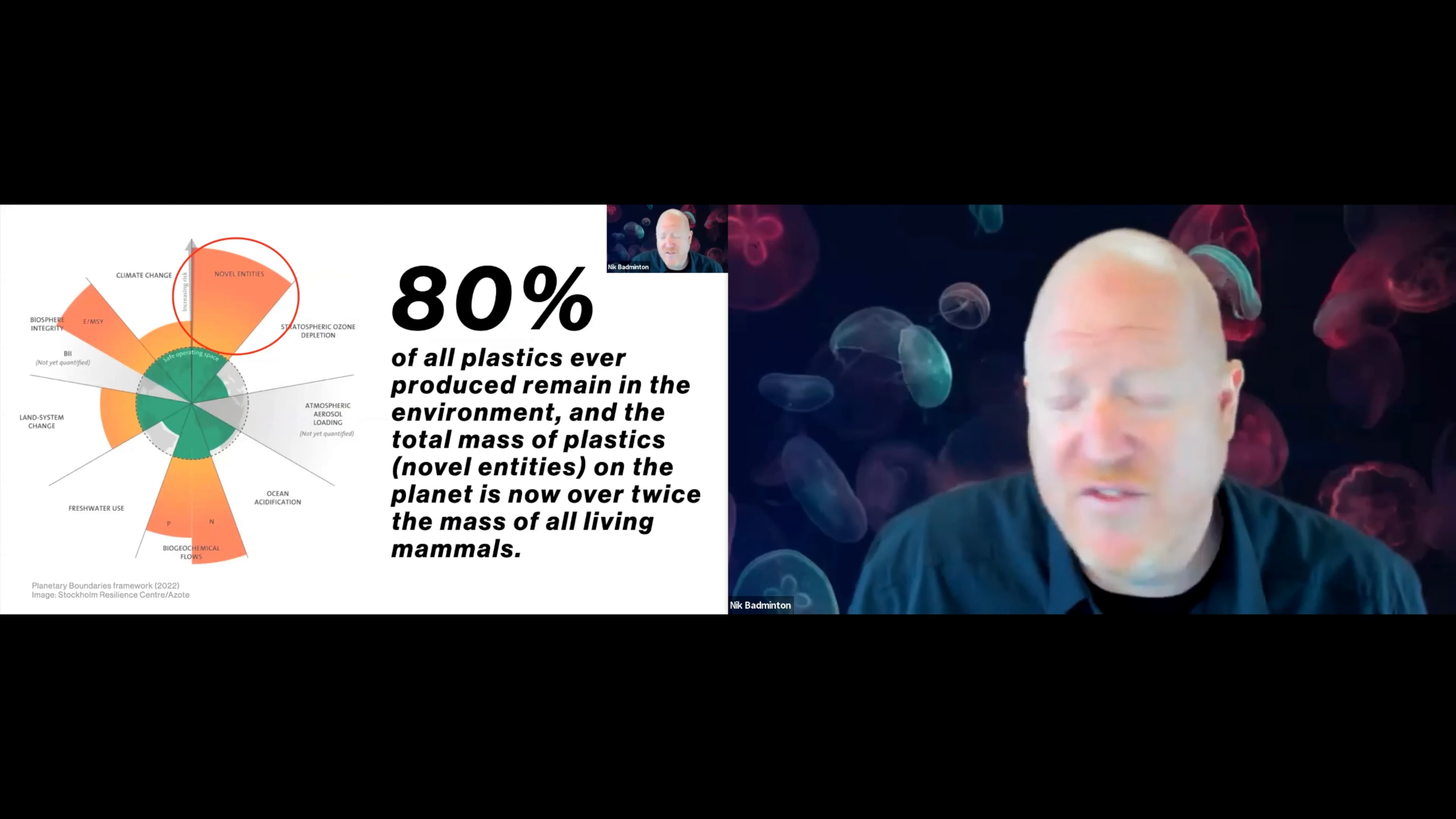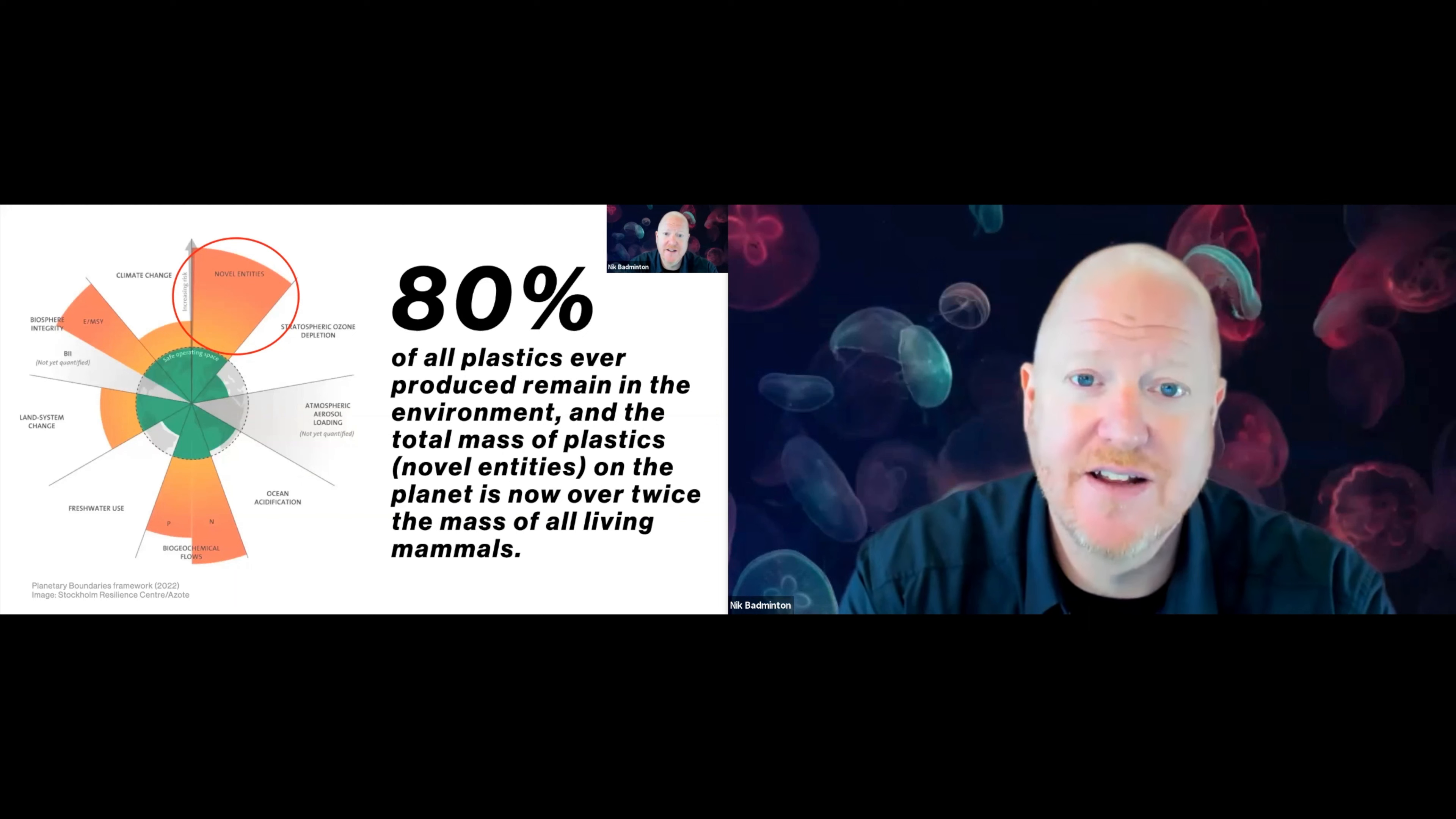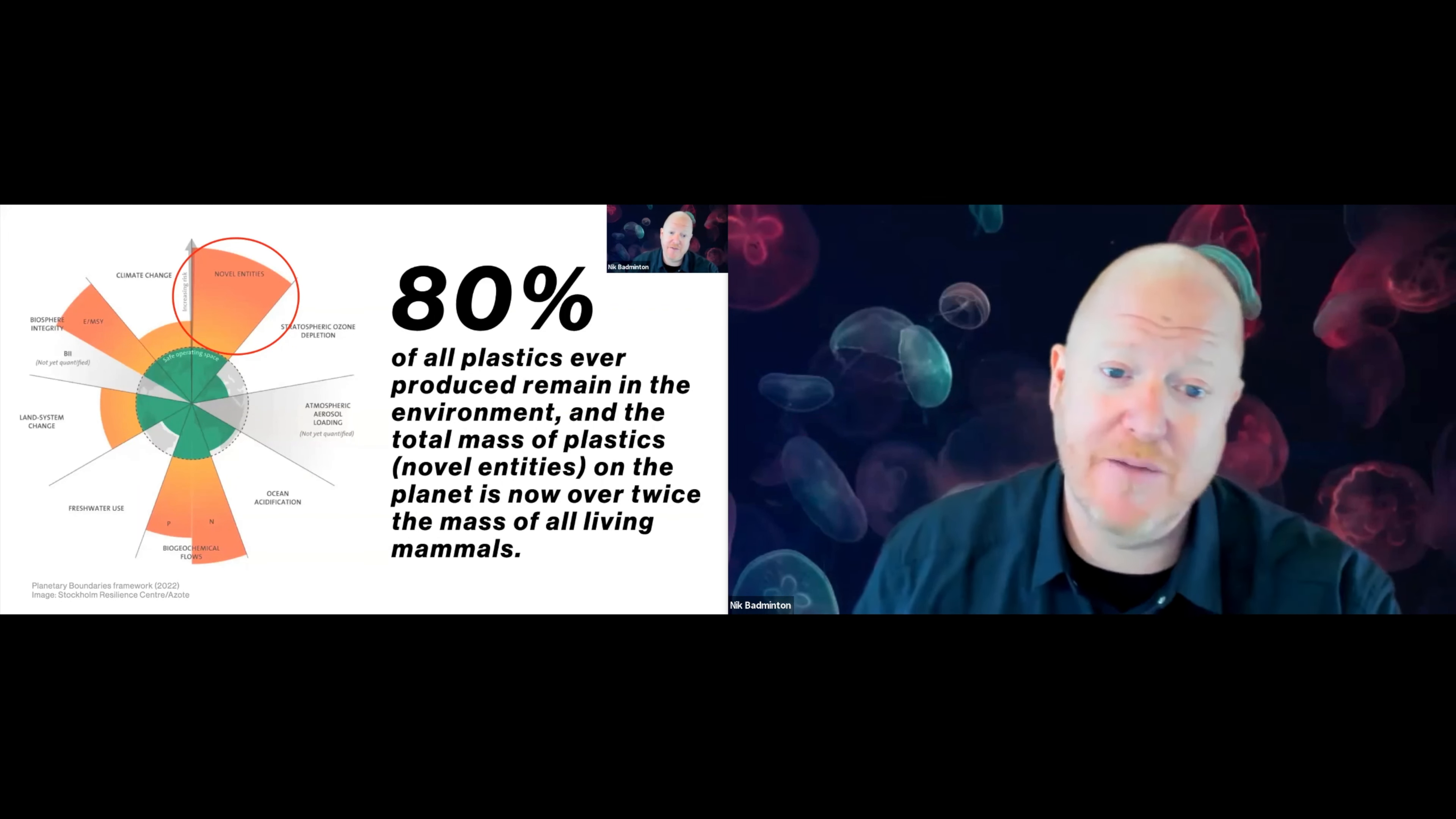And part of the waste problem we've got is plastics or novel entities, as it's seen by the planetary boundaries framework. 80% of all plastics ever produced remain in the environment. In fact, it's got twice the mass of all living mammals on the planet. There's a problem and we need to do something about this.